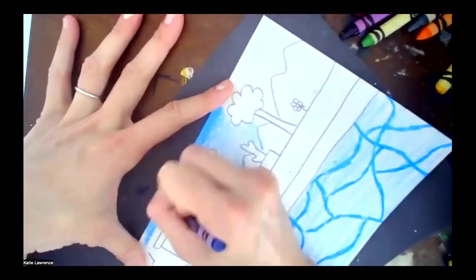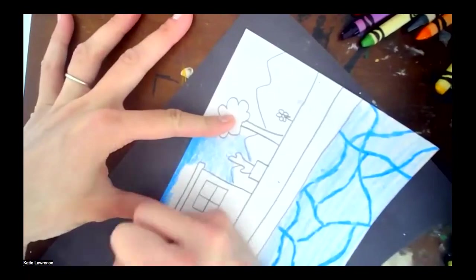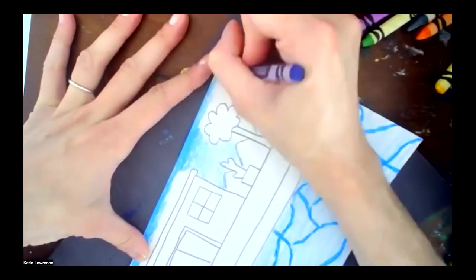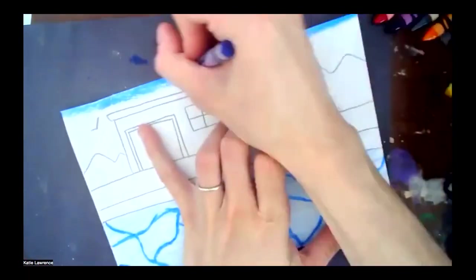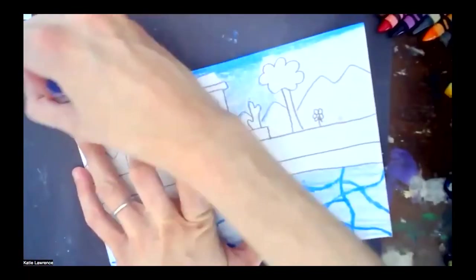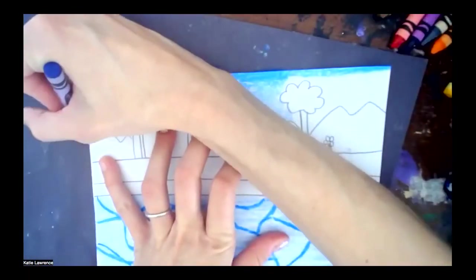So the top of your paper, color really hard. All along the top, really hard, so it's really bright blue. And then color lighter.